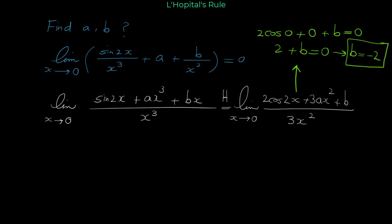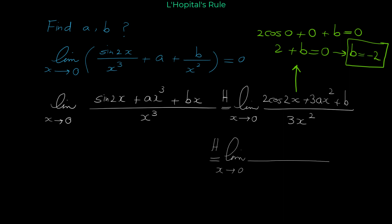Now we apply L'Hôpital's rule again. With b equal to negative 2, the numerator is 0, so we still have 0 over 0 — an indeterminate form — allowing us to apply L'Hôpital's rule a second time. The derivative of the denominator 3x squared is 6x. The derivative of the numerator gives negative 4 sine 2x plus 6ax; the derivative of the constant b (which is negative 2) is 0.